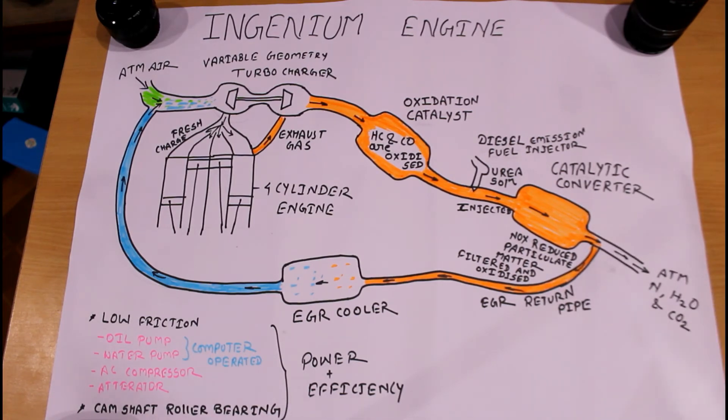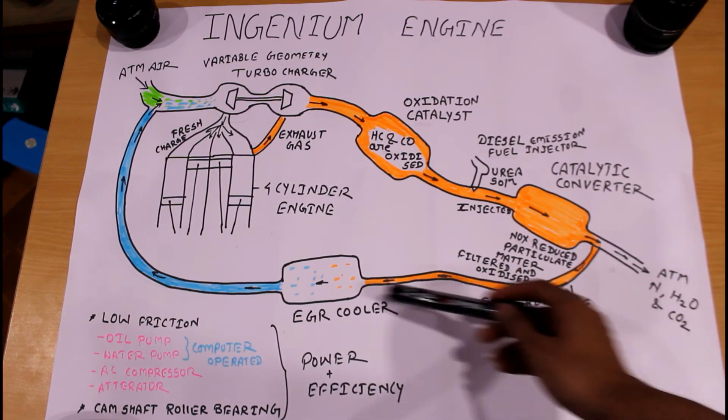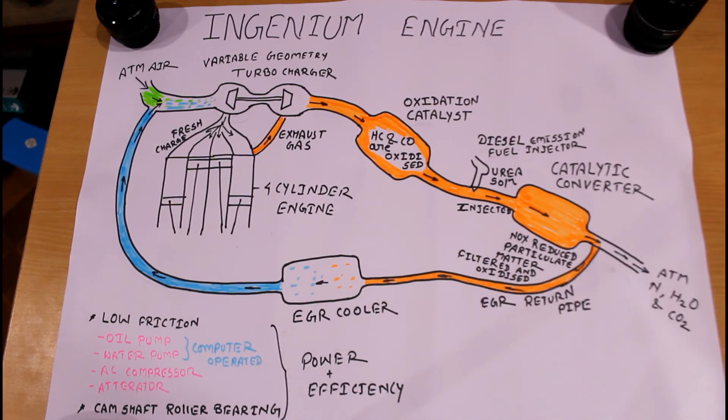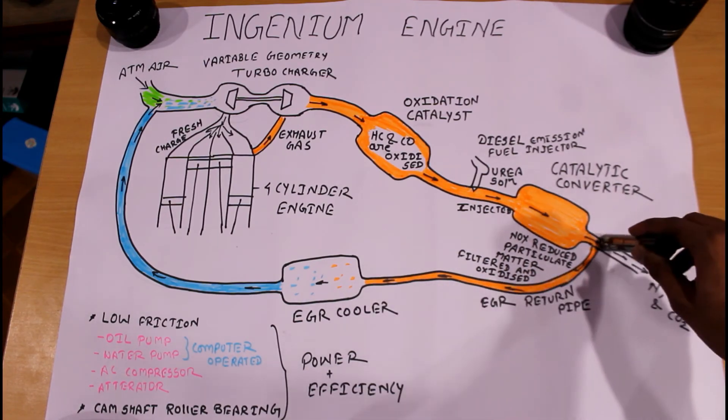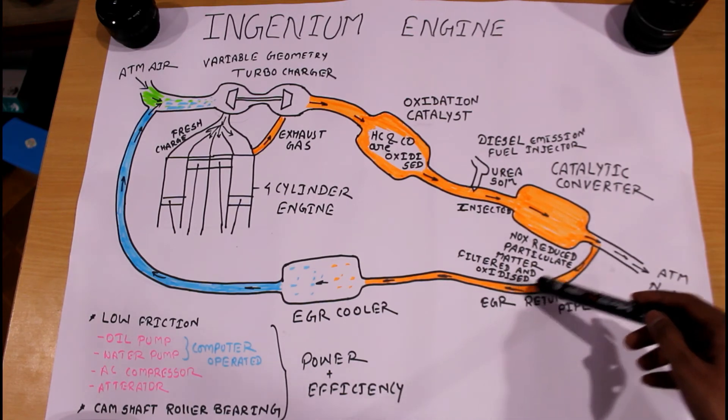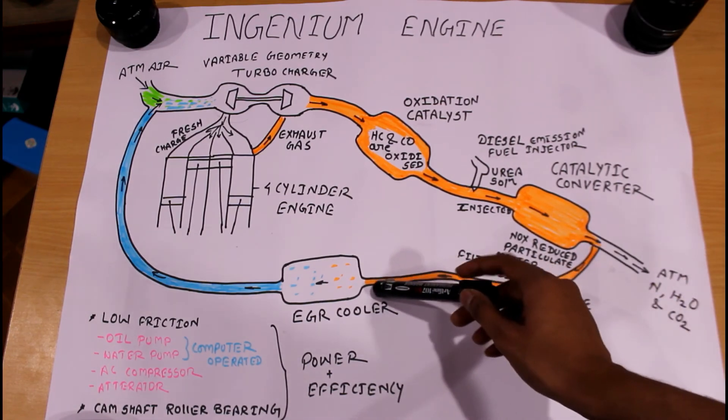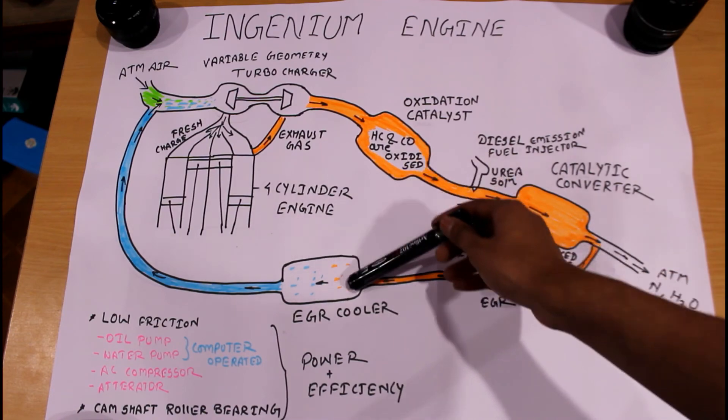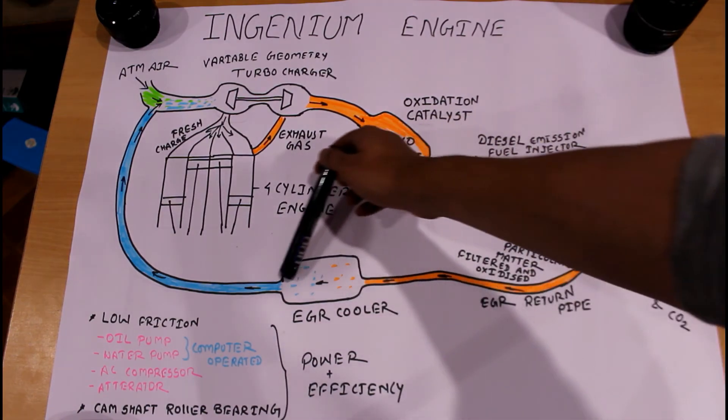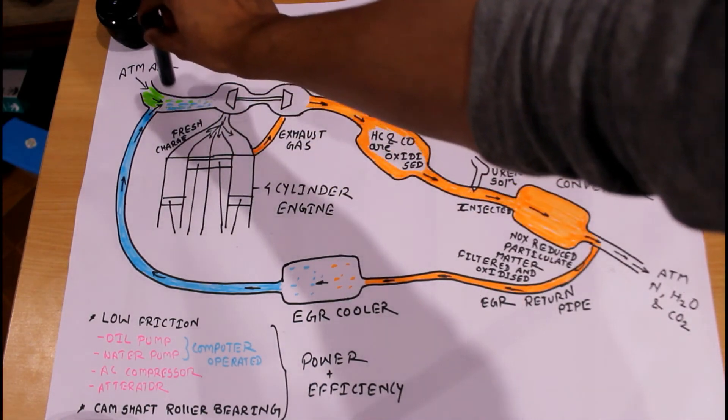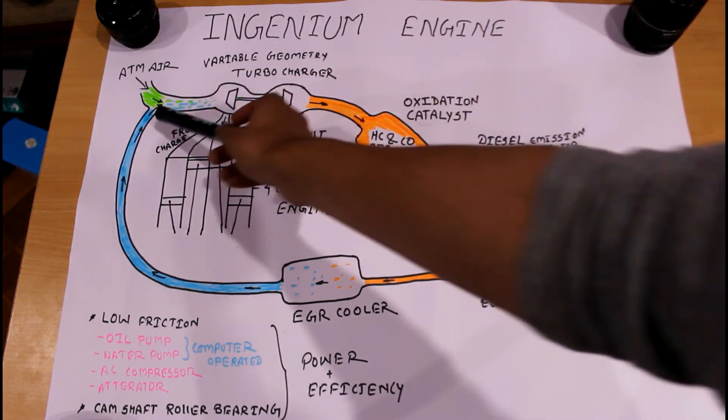Additionally, we are using the EGR system for reducing NOx. After the catalytic converter, an EGR return pipe is situated, and through this exhaust gases come to the EGR cooler to reduce its temperature. Then it mixes with atmospheric air.